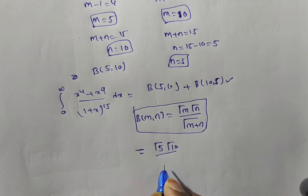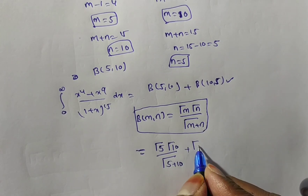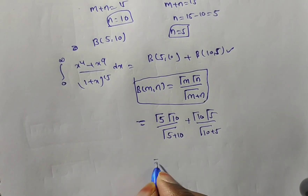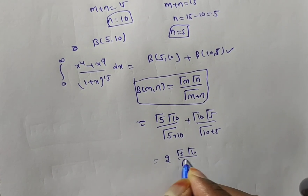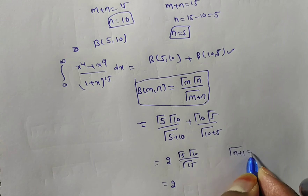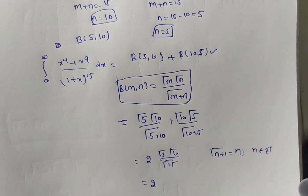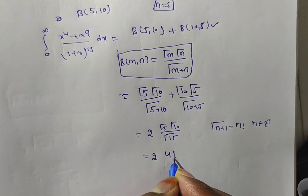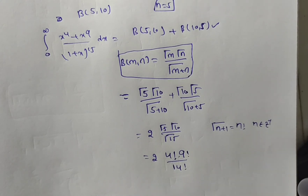This gives us 2 × Γ(5)·Γ(10) / Γ(15). Using the property that Γ(n+1) = n! for positive integers: Γ(5) = 4!, Γ(10) = 9!, and Γ(15) = 14!. So the expression becomes 2 × 4! × 9! / 14!.